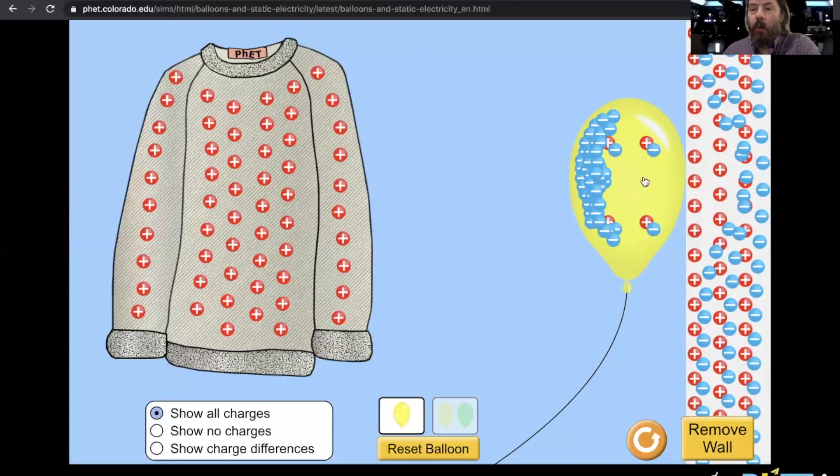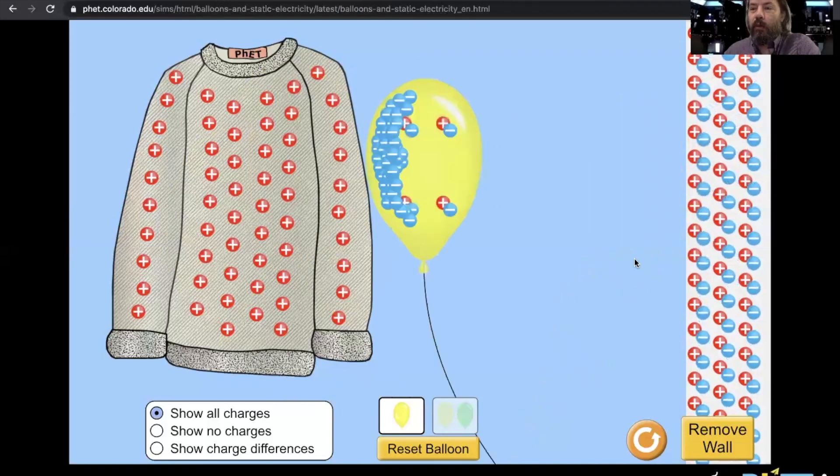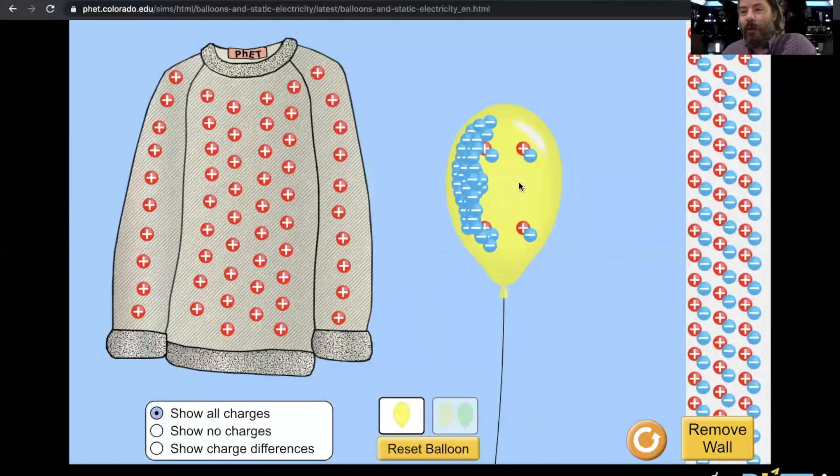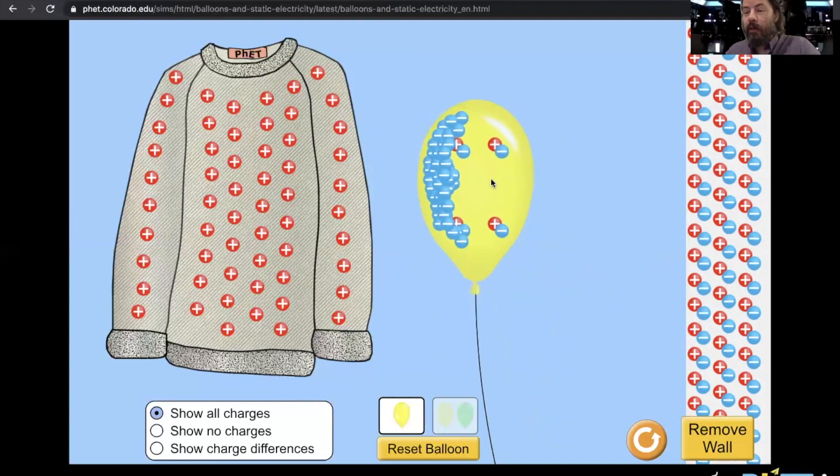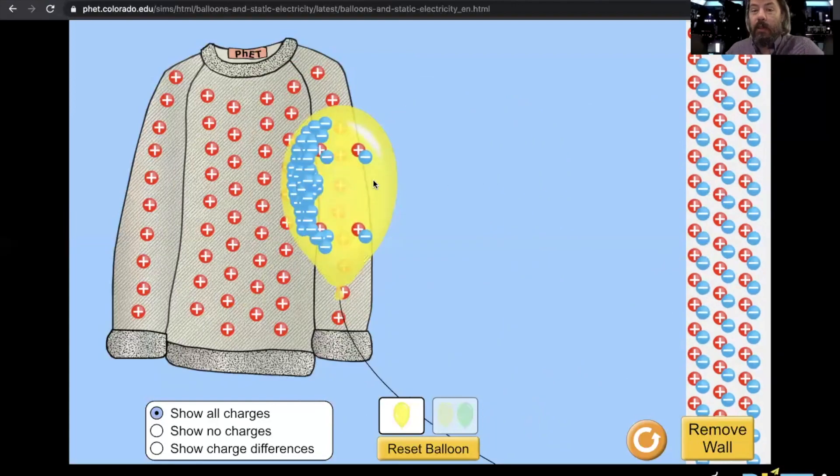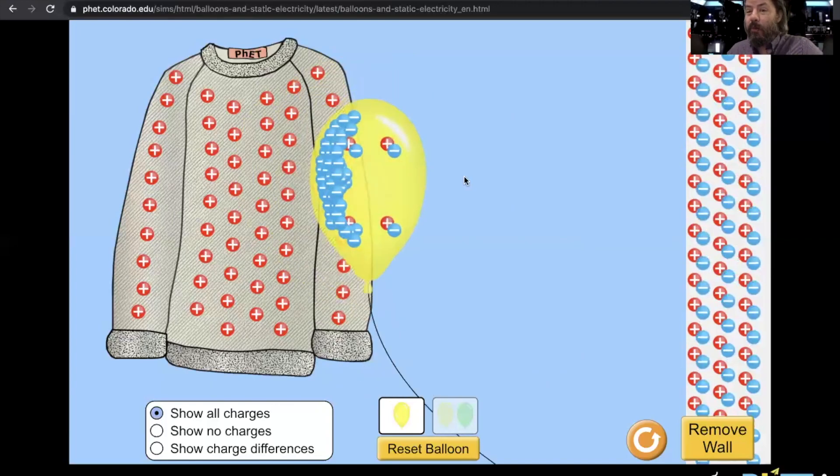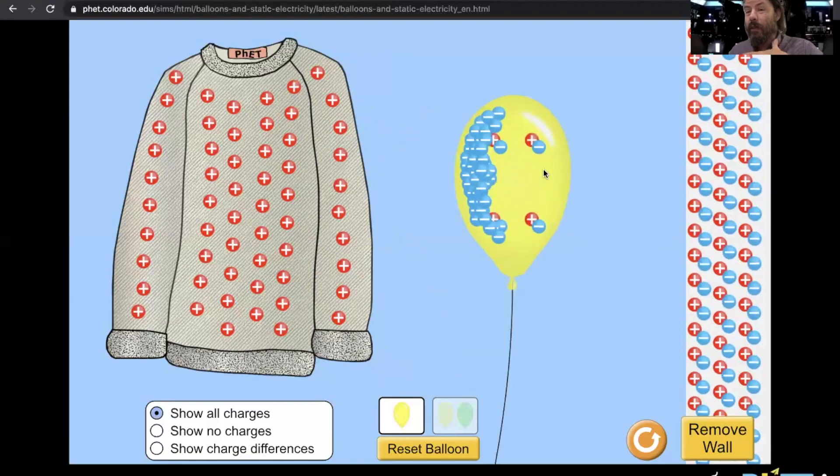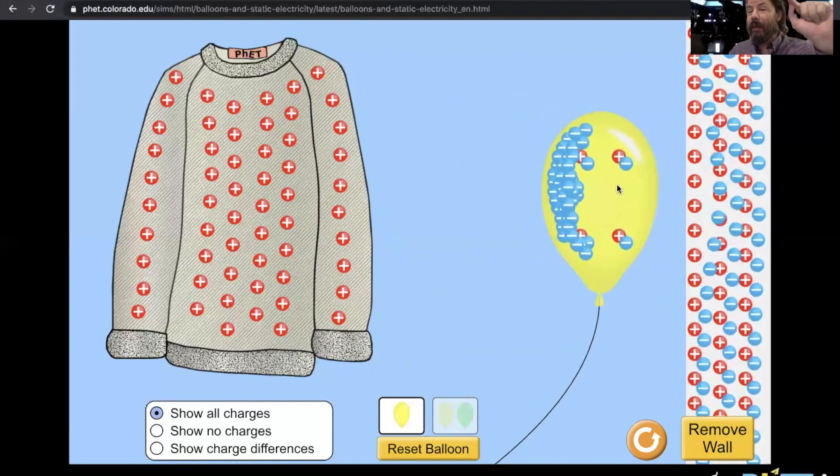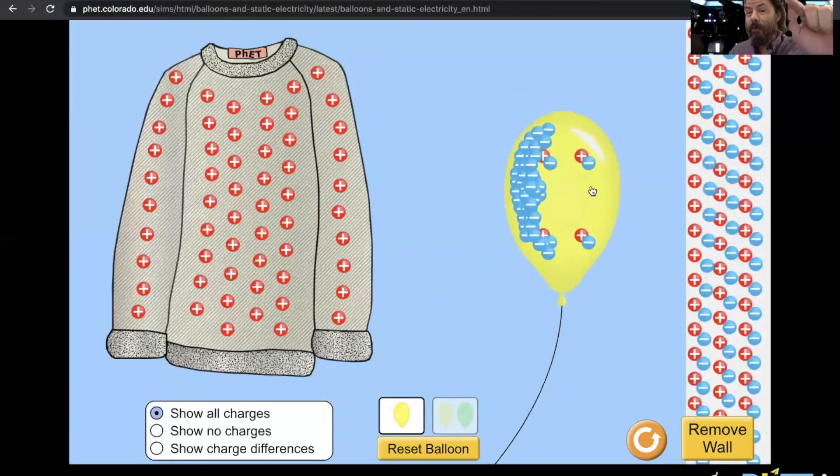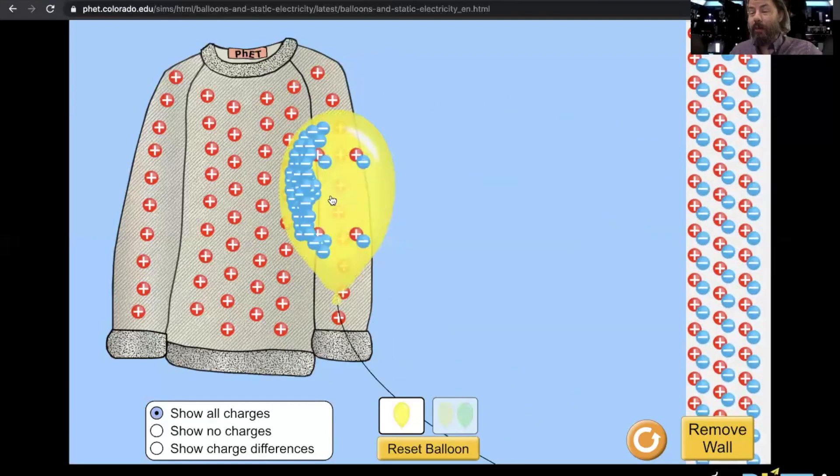Now, what happens when you rub your feet against the floor, and you so kindly walk up to somebody else, and touch their ear, and you zap them, or you touch a metal doorknob, and you get that little shock. Basically, you have rubbed extra electrons onto your finger, or onto your body, and when you touch something that is actually conducting, like metal, all these electrons jump to the other object to neutralize or equal out the charge, and you get that little zap.